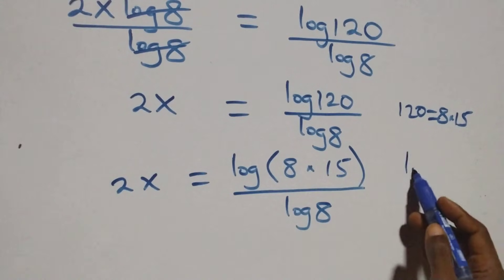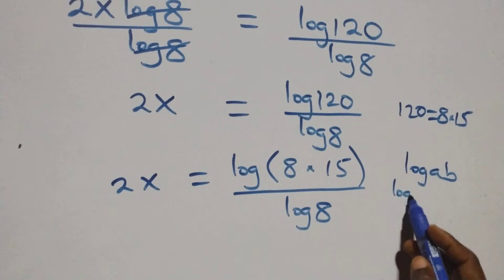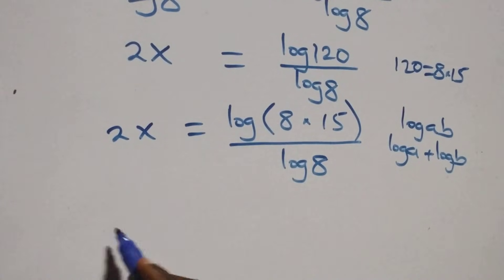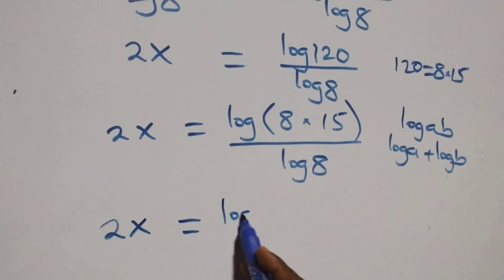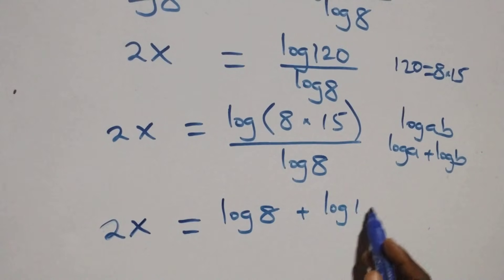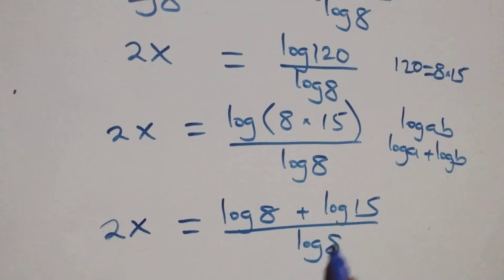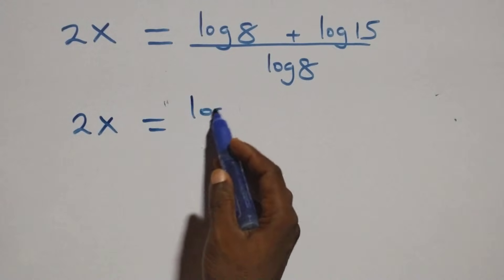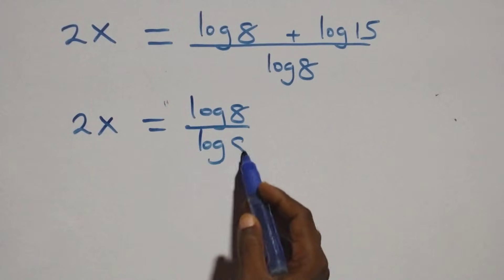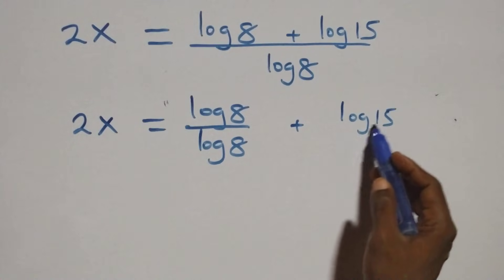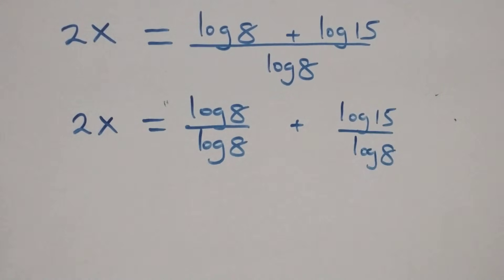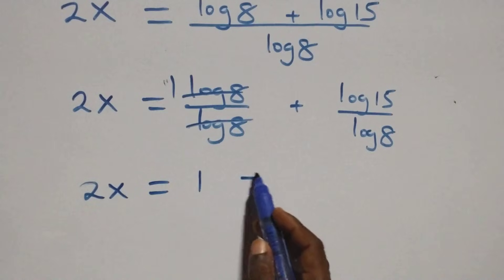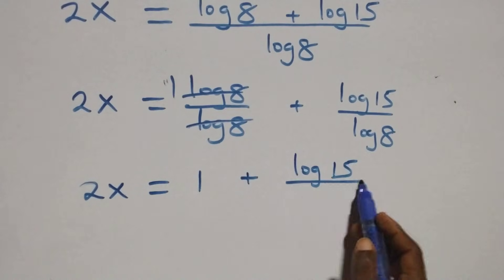Now we apply the logarithm product rule: log(a times b) can be written as log a plus log b. So we have 2x equals (log 8 + log 15) over log 8. We then separate this into two fractions: 2x equals log 8 over log 8 plus log 15 over log 8. Since log 8 over log 8 equals 1, we get 2x equals 1 plus log 15 over log 8.